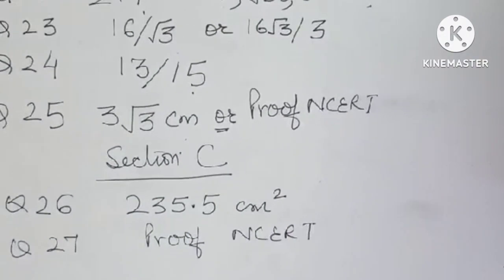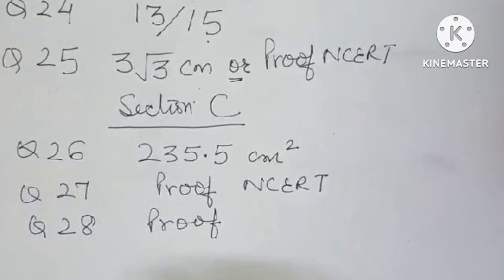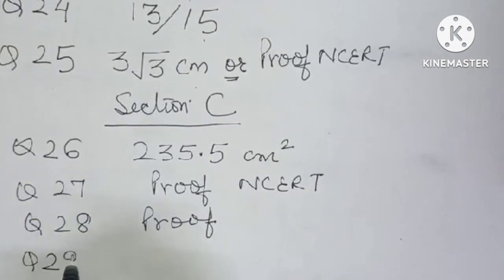Let's see section C. Question number 26 is 235.5 centimeter square. Question number 27 is proof of NCRT. Question number 28 is also proof of NCRT.